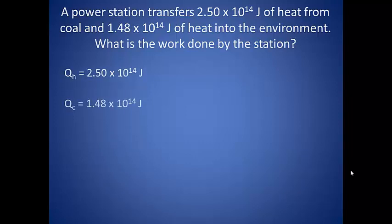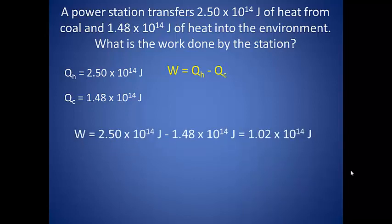The heat supplied by the coal is the heat from the hot reservoir. So QH equals 2.5 times 10 to the 14th joules. The heat energy released into the environment is 1.48 times 10 to the 14th joules, so it is given the designation of QC. We can use our work equation since we know both the hot and cold energy transfers. So to find the work done we simply take the heat from the hot reservoir and subtract the heat from the cold reservoir, and we get 1.02 times 10 to the 14th joules of energy.